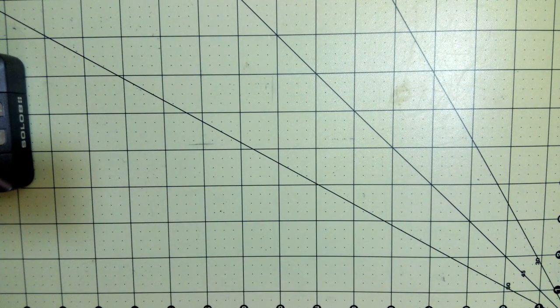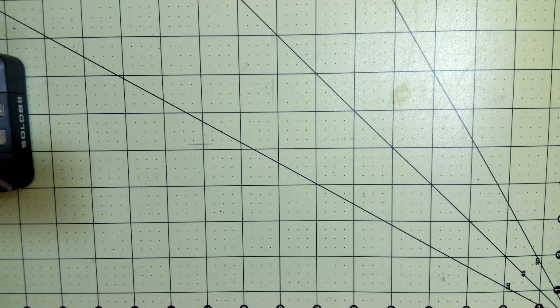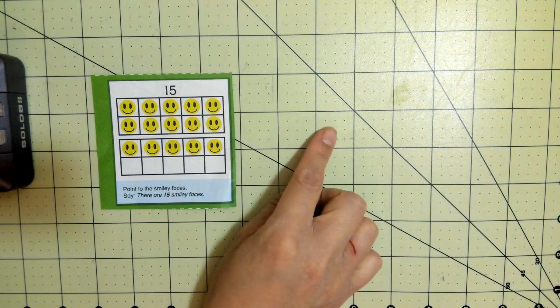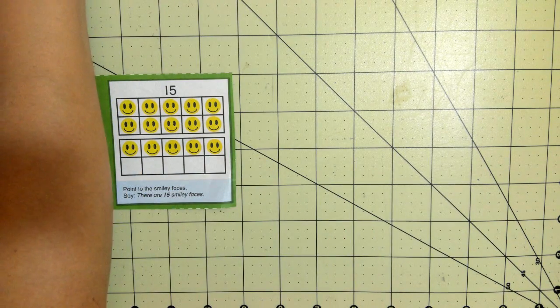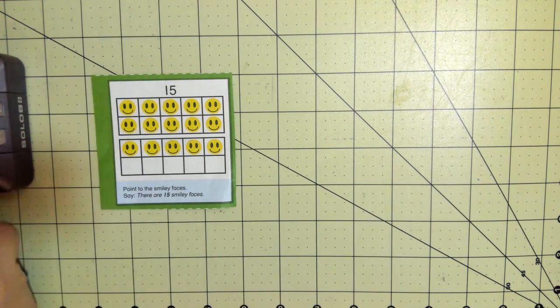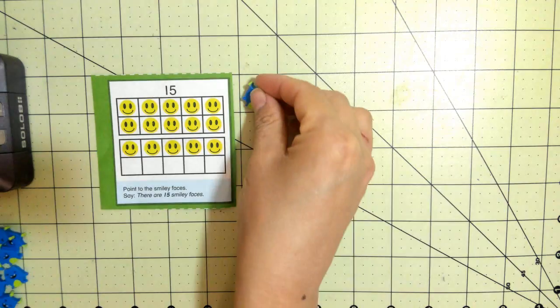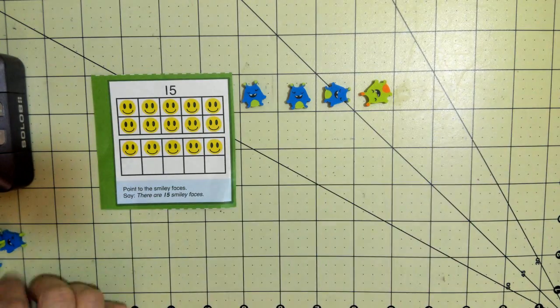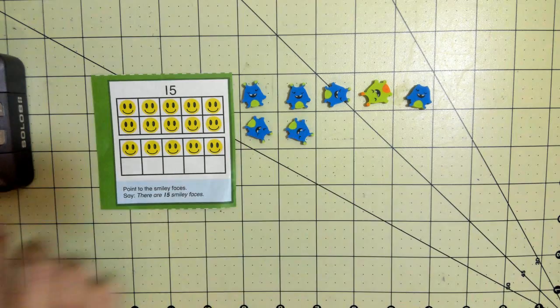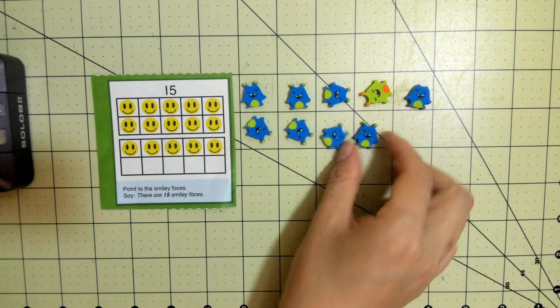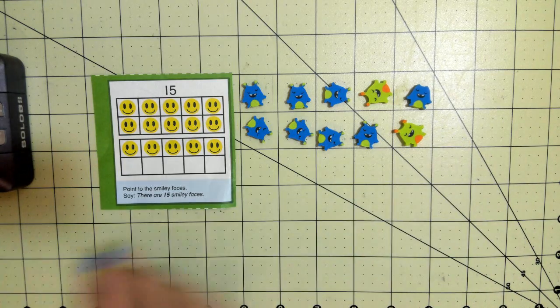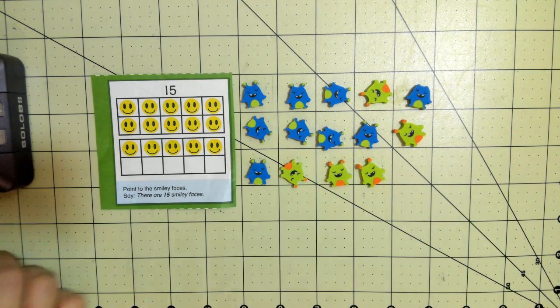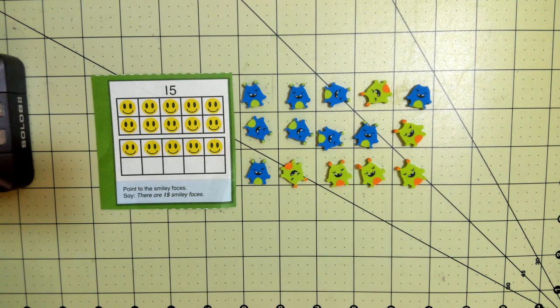So what you're going to do is you're going to pick, like we've been practicing, one of your cards and you're going to build that number with any kind of counters you have. So I picked the number 15, so I'm going to take some counters and I'm going to count 15. 1, 2, 3, 4, 5, 6, 7, 8, 9, 10, 11, 12, 13, 14, 15.